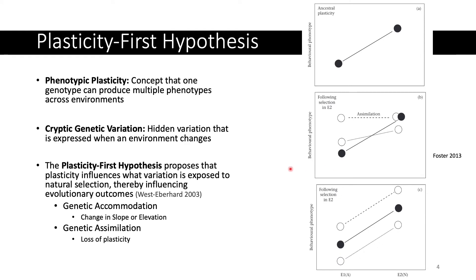This is how we get to the plasticity-first hypothesis, because the hypothesis proposes that when an environment changes, cryptogenetic variation is released first, and then selection acts to shape the mean phenotype, rather than selection acting on the already existing levels of variation.